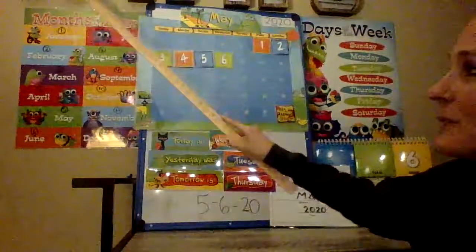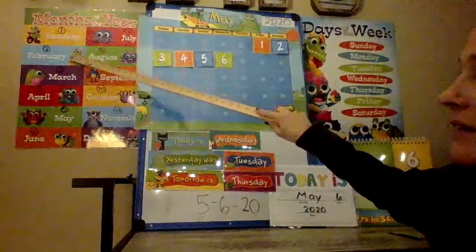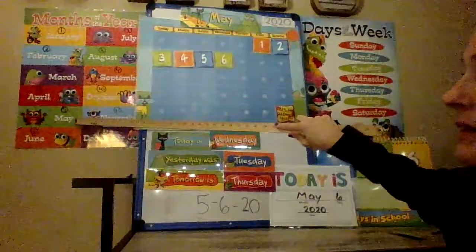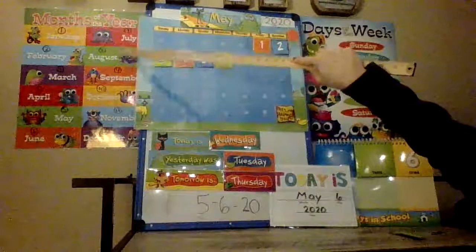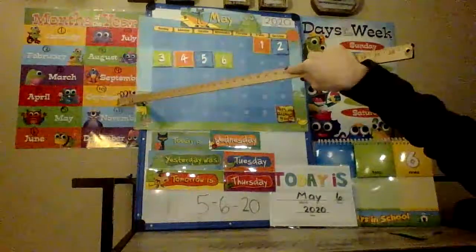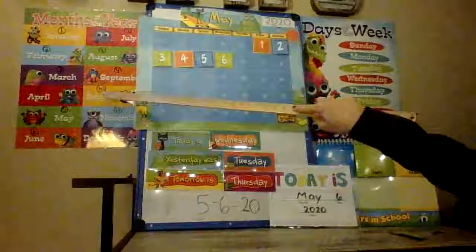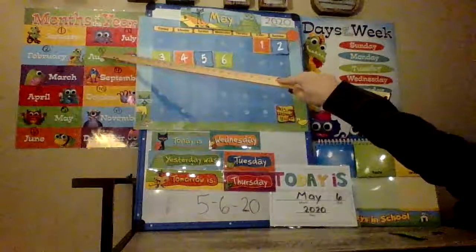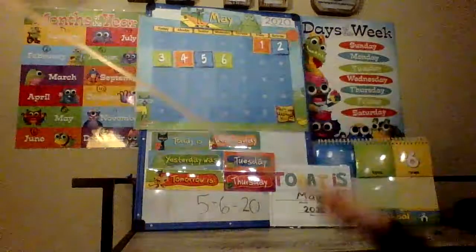We're going to start at the beginning and read through the months: January, February, March, April, May, June, July, August, September, October, November, December. Great. And you can see the number — October is the 10th month. August is the 8th month. We are in May, and May is our 5th month. Great job.